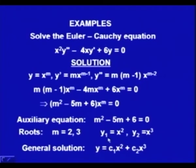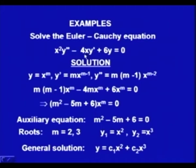We can verify: for y = x², y'' = 2, so x²·2 − 4x·2x + 6x² = 2x² − 8x² + 6x² = 0. ✓ Similarly, we can verify with x³ or with the general solution.